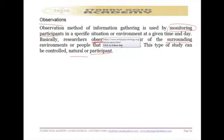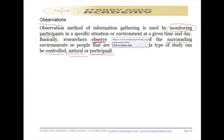Controlled observation is when the researcher uses a standardized procedure of observing participants or the environment — you have controlled it and do not want to go outside the standard you have set. Natural observation is when participants are observed in their natural conditions. Participant observation is when the researcher becomes part of the group being studied. So there are three types: controlled, natural, and participant observation. This is also a type of primary data source.